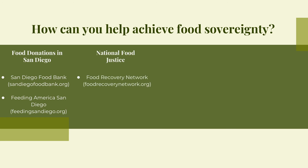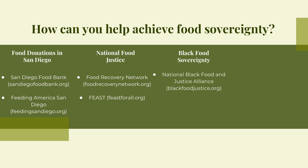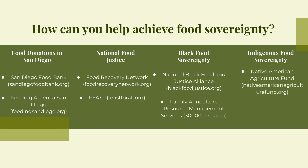Here are some national food organizations you can be involved in. Food Recovery Network is a national non-profit that unites students at colleges and universities to fight food waste and hunger by recovering perishable food that would otherwise go to waste from campus dining halls and donating it to those in need. Its goal is to change the norm from food waste to food recovery in the United States. Another national organization is BEAST — Food Education Access Support Together — which provides food education, access to fresh whole foods, and support for nutritional discussions. Black people are essential to the food sovereignty movement. The National Black Food and Justice Alliance organizes for Black food and land rights by increasing visibility of Black leadership, advancing Black people's struggle for just and sustainable communities, and building power in food systems and land stewardship. Family Agriculture Resource Management Services is a legal non-profit committed to assisting Black farmers and landowners in retaining their land for the next generation.